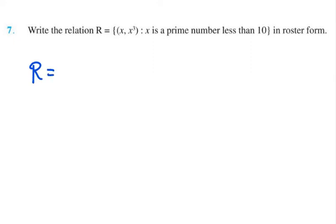So R equals the prime numbers must be less than 10. So we have numbers 2, 3, 5, and 7.